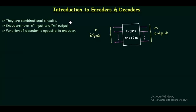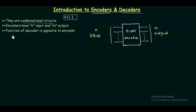We have already completed two topics in our combinational circuit — multiplexers and comparators. Now in this presentation we will study the introduction to encoders and decoders. They are also combinational circuits and fall under the MSI (medium scale integrated circuit) group, after which we have the LSI large scale integrated circuits. Multiplexers were also part of this MSI group.